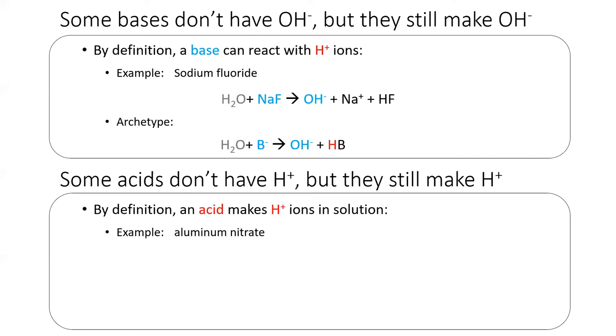Similarly, not all acids contain H+. An acid only needs to increase the amount of H+ in solution. Aluminum nitrate is an acid. When aluminum nitrate is added to solution, aluminum steals OH- from water, leaving behind an H+ ion. The nitrate is the spectator. The archetypal pattern for this reaction is shown here. A greedy cation steals OH- from water, leaving behind H+.